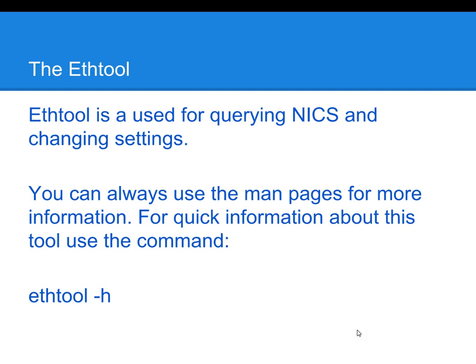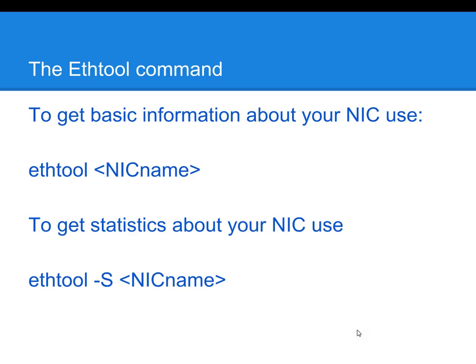So let's have a really quick look at the ethtool command. If you want more information about the ethtool command, you can always type 'man ethtool' and read the manual pages. If you want quick on-the-fly information, you can type 'ethtool -h' for help. If you want to get basic information about the configuration of your network interface card, you can type 'ethtool' followed by the name of your network interface card. If you want to get actual statistics, you can type 'ethtool -S' and then the device name.